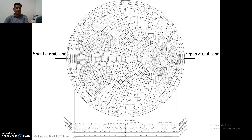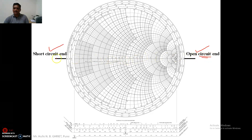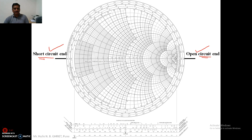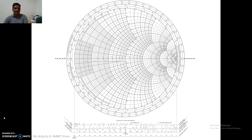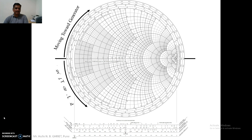We have two ends: one end is known as the short circuit end and the other is the open circuit end. It indicates the open circuit impedance and this indicates short circuit impedance. Reverse is the case for admittance. Here we have the two concepts in the Smith chart — moving towards generator in the clockwise direction, and moving towards the load in the anticlockwise direction.